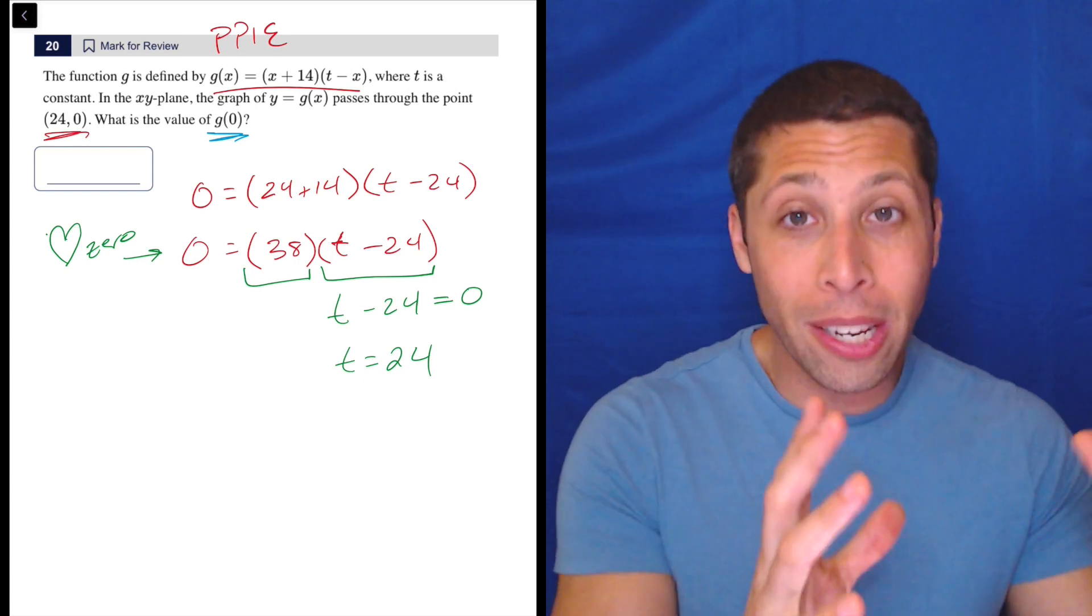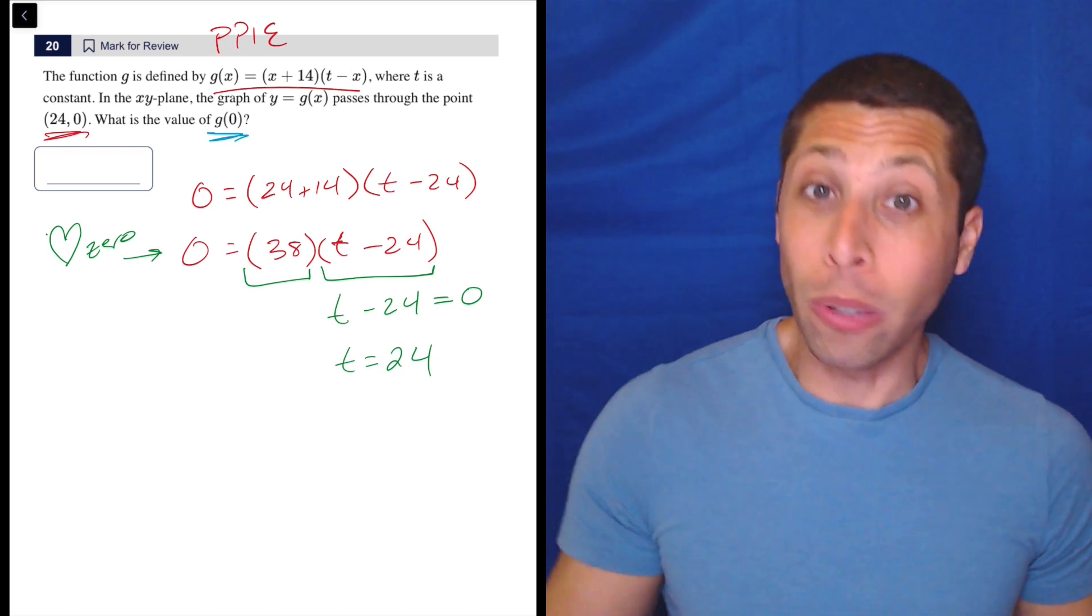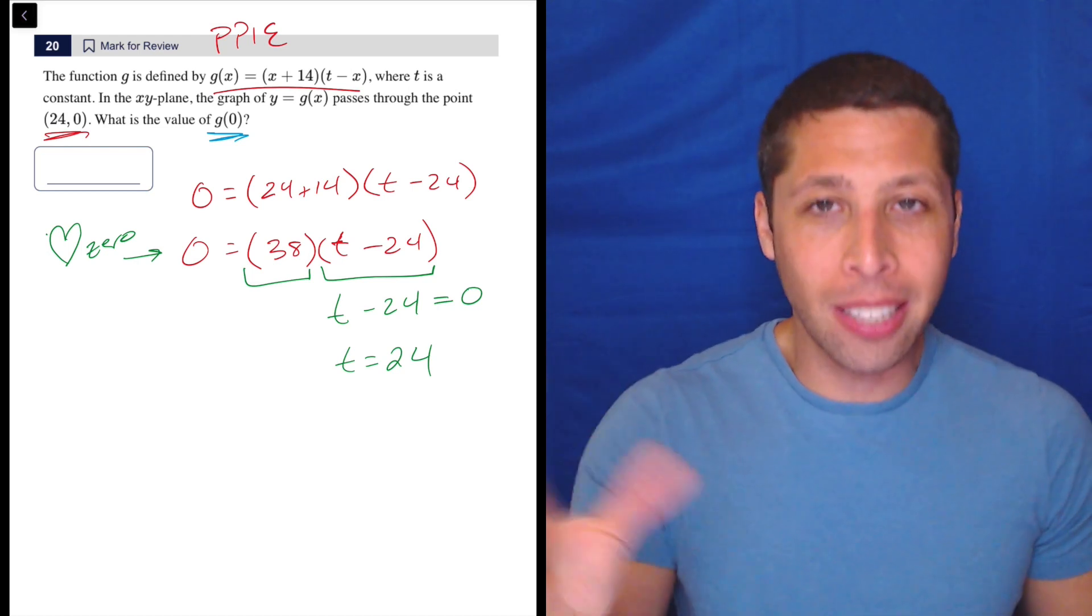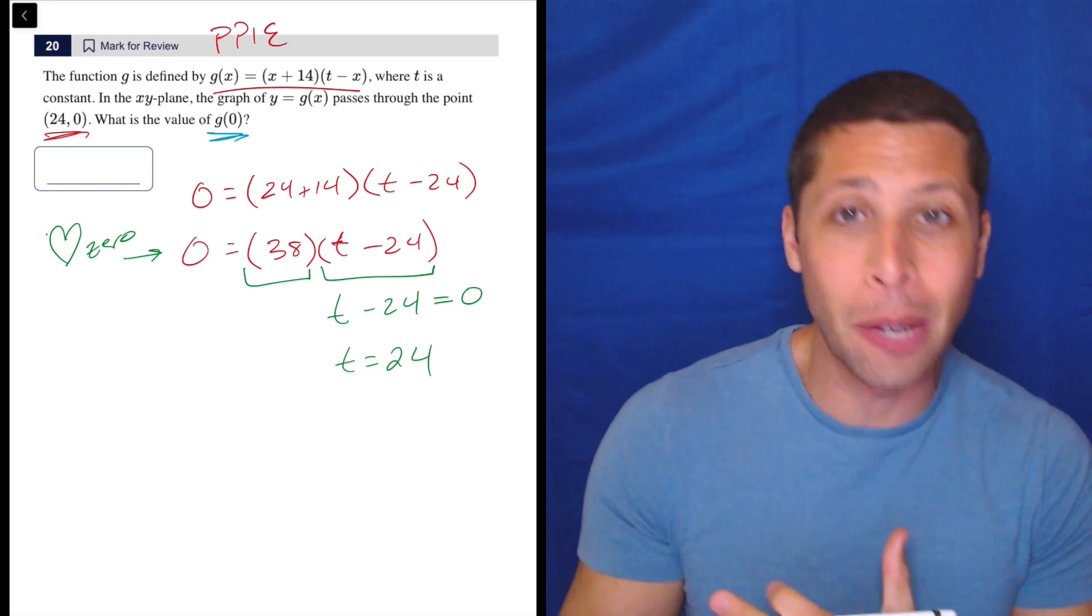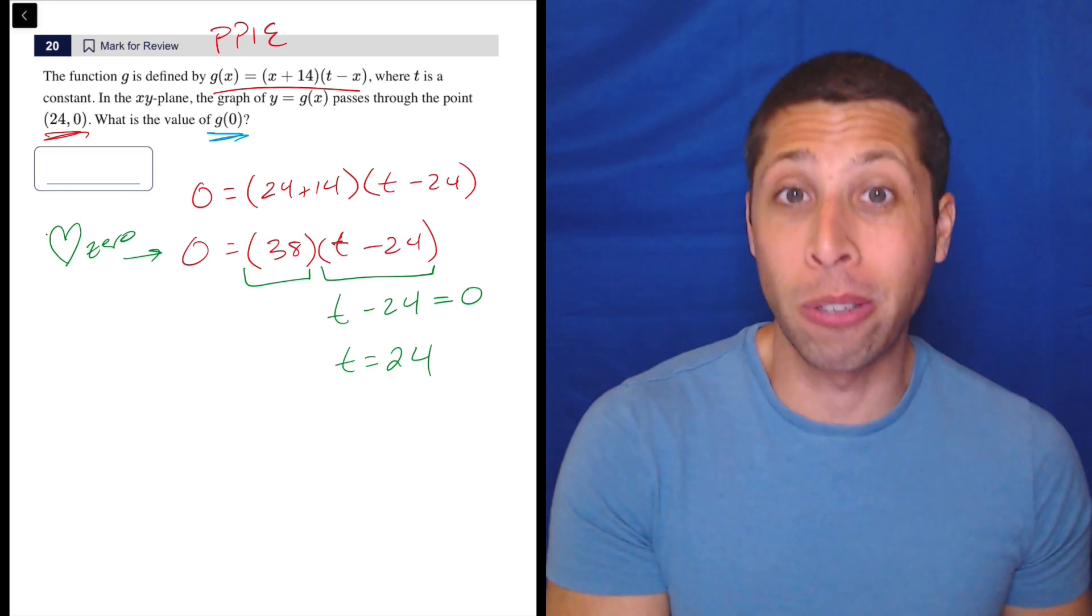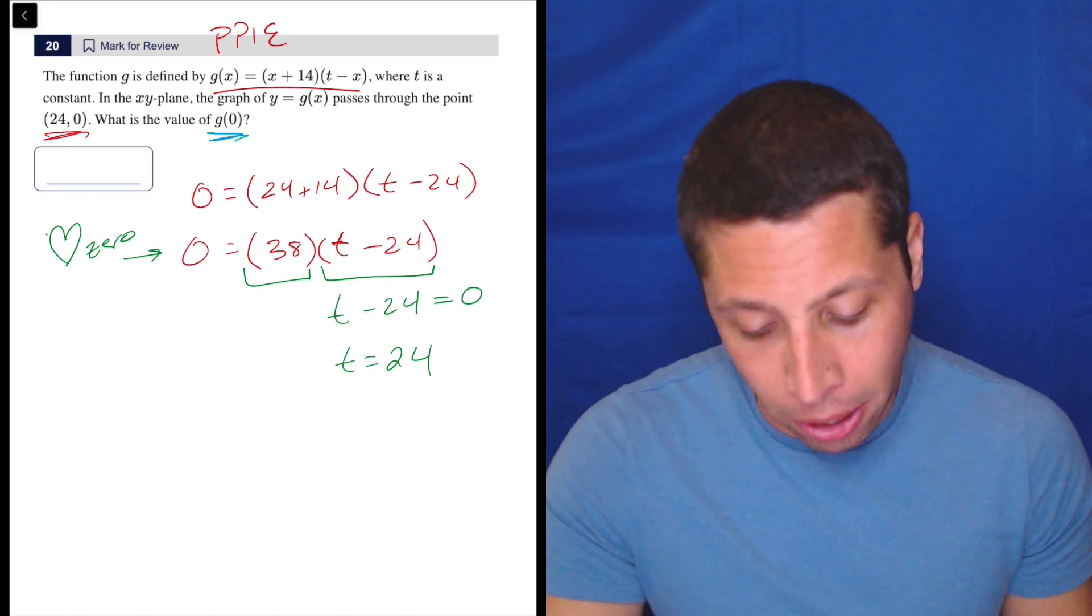So if you ever see an equation, especially if it's got pieces that are being multiplied together, and it's equal to zero, you're probably going to think about each piece separately and what would cause that piece to be equal to zero. And then that might tell you something about the whole equation. So the zero property is very, very important.